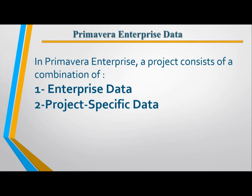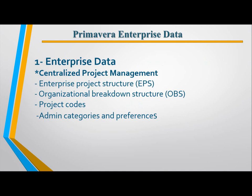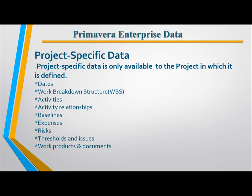Our topic is Primavera Enterprise. Primavera Enterprise contains data: major real articles, enterprise data, and project-specific data. Enterprise data includes: Enterprise Project Structure, Organization Breakdown Structure, admin categories and preferences, and project corner. Project-specific data includes: Work Breakdown Structure, activity relationships, and baseline experience.